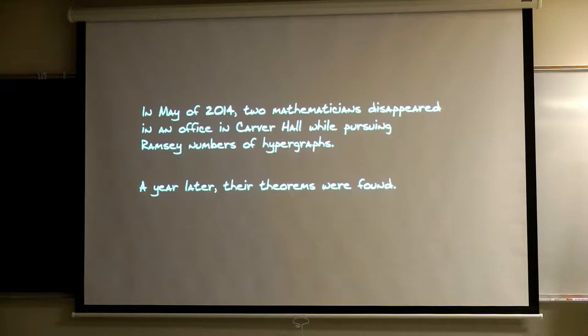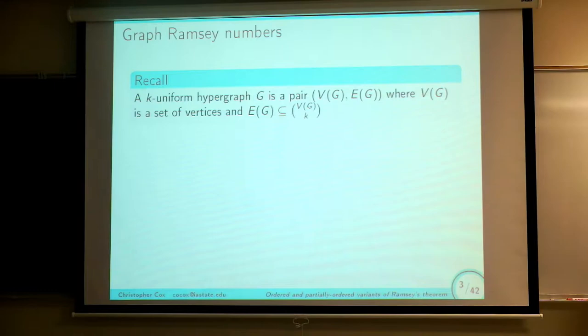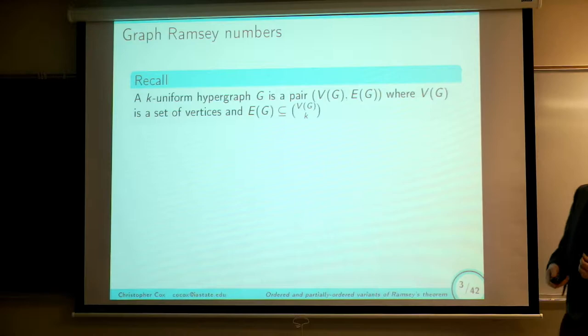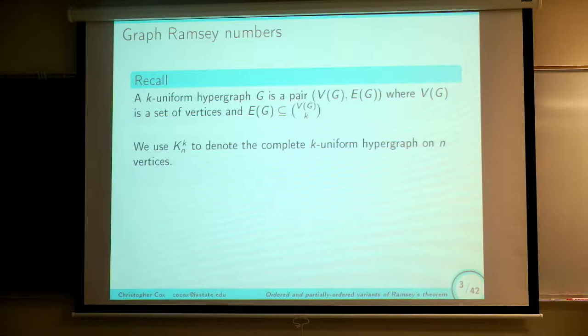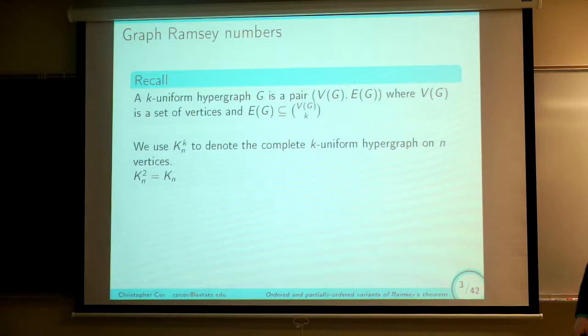A year later, their theorems were found. Let's just recall that a K-uniform hypergraph — we're going to be doing graph theory — is simply a pair of vertices and a set of edges, where the edges consist of K-sets of vertices, so every edge has exactly K vertices in it. A two-uniform hypergraph is what we commonly call a graph, where every edge has exactly two vertices. We're going to use K_N^K to denote the complete K-uniform hypergraph on N vertices, taking every single K-set as the edge set. In the two-uniform case, we'll abbreviate K_N^2 as K_N, the complete graph of order N.